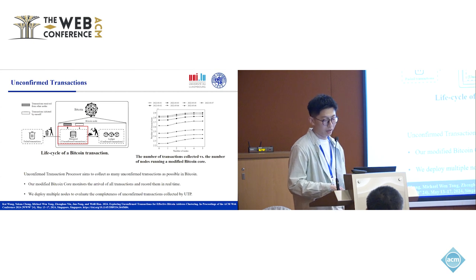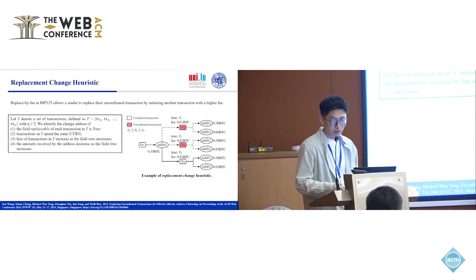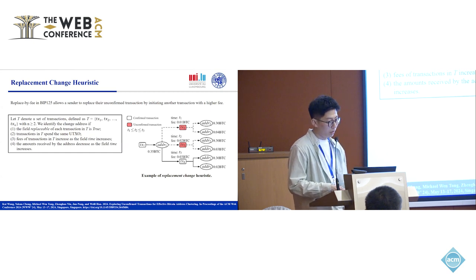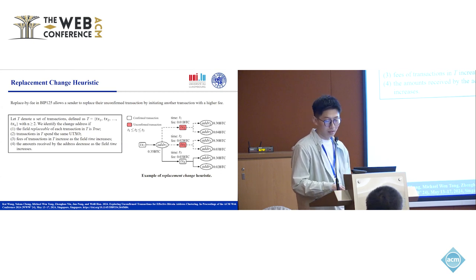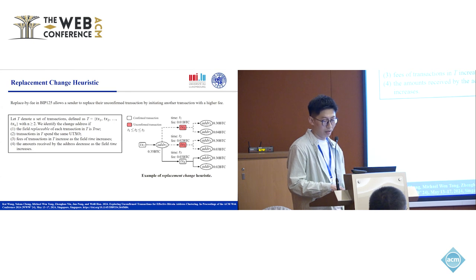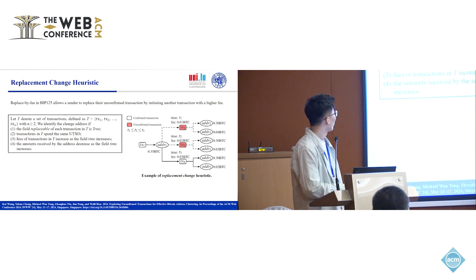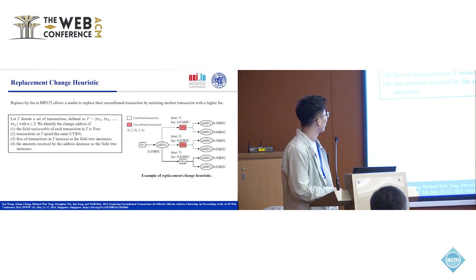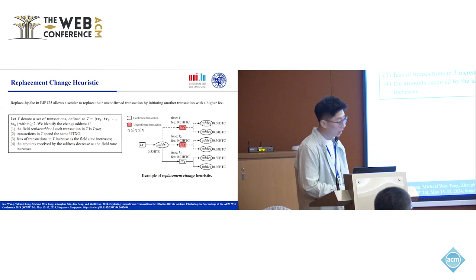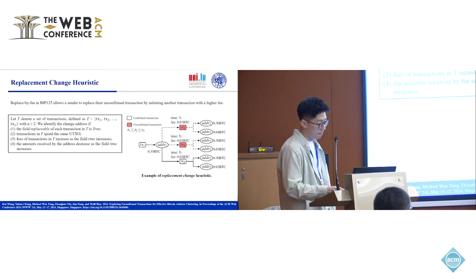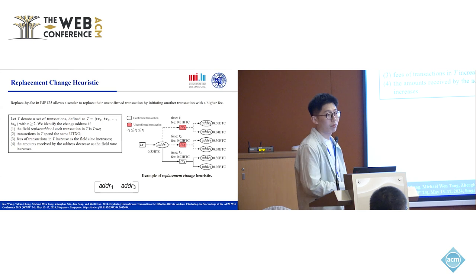We propose two clustering heuristics based on unconfirmed transactions. The first heuristic is the replacement change heuristic. Replace-by-Fee allows a sender to replace their unconfirmed transaction by submitting another transaction that pays a higher fee. We designed the replacement change heuristic to identify the change address based on several conditions: the replaceable field is true, transactions spend the same UTXO, fees increase over time, and the amount received by the address decreases over time. In this example, address 3 is the change address, so address 1 and address 3 belong to the same user.